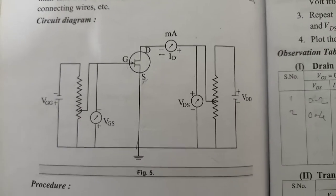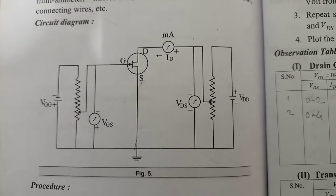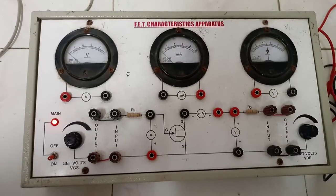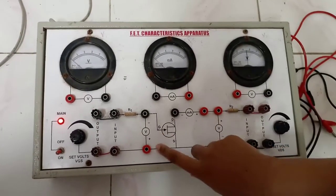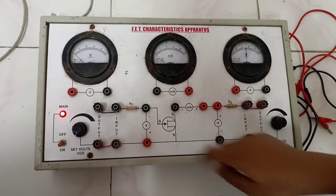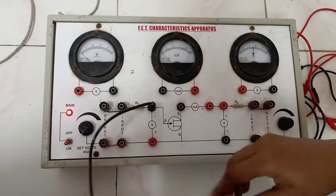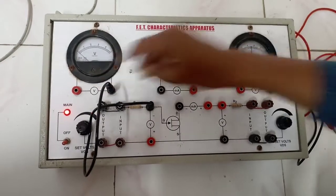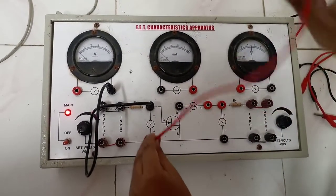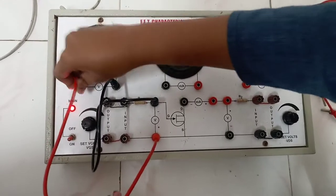This is the circuit diagram of this experiment. The connection of voltage across the gate and source is VGS. We connect the negative of VGS to the negative of the voltmeter, and the positive of VGS is connected to the positive terminal of the voltmeter.